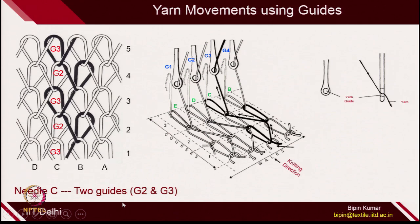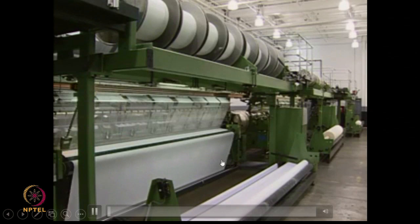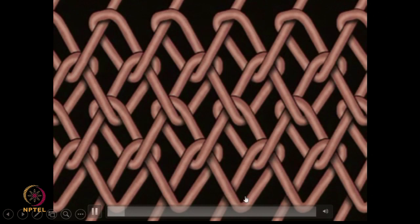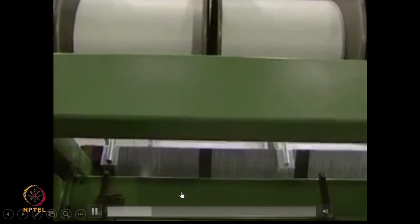For each needle, two guides come and interact during fabric production. Each guide has a hole through which yarn can be passed, and this guide can shift position during course formation. This is a normal warp knitting machine — Karl Mayer is the most popular manufacturer. You can see the warp beams and, if you follow the path of one yarn, you can see how the yarn path moves and connects with different courses. This structure is created by multiple yarn ends prepared on the creel or beam.